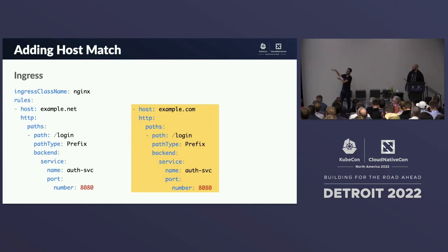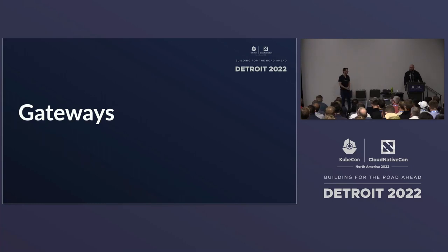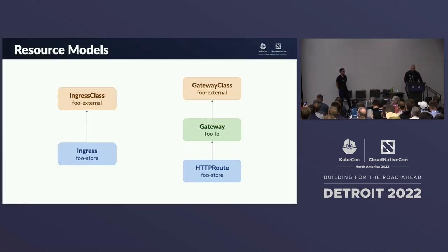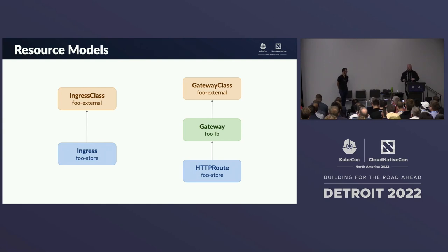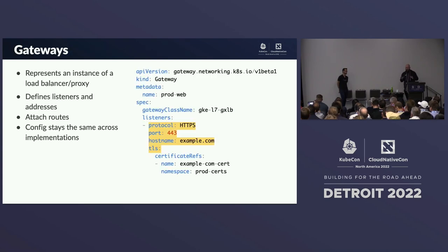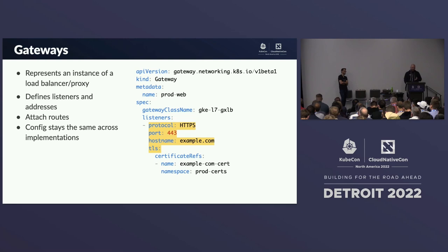Rob alluded to gateways via parentRefs. In Gateway API, Gateway is an actual resource. We have GatewayClass, which is like IngressClass — it tells your controller which routes it's responsible for. We also now have the Gateway Kubernetes resource, which lets you represent your load balancer or proxy as a Kubernetes resource. You can define your listeners and addresses on it, attach your routes to it, and configuration stays the same across implementations.